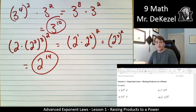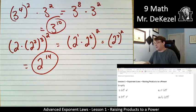7 times 2 is 14. So we are working from the inside of the brackets out.